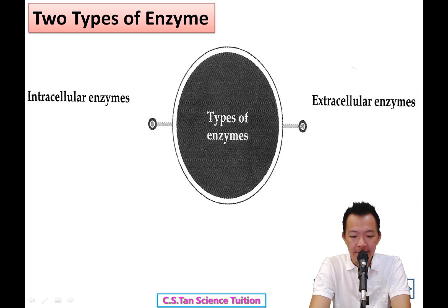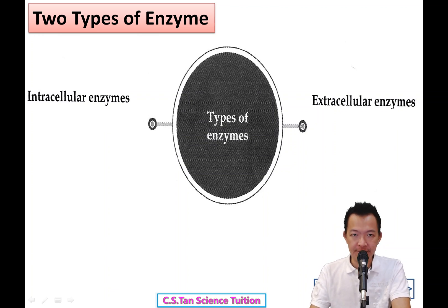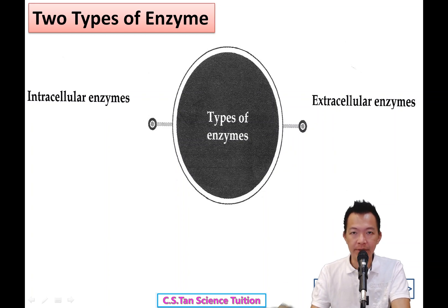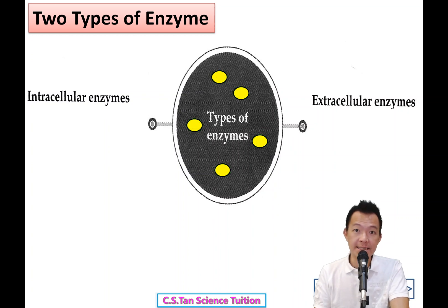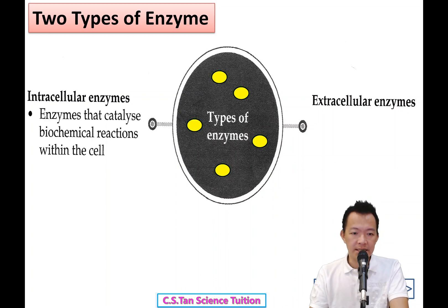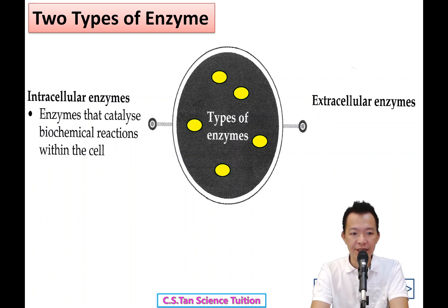2 types of enzymes. So when we talk about enzymes, we're having 2 types of enzymes. Number 1: intracellular enzymes — 细胞里面的 enzyme. So what's meant by intracellular enzyme? Intracellular enzymes are enzymes that catalyze the biochemical reactions within the cells — 就是在细胞里面进行化学反应的 enzyme. We call these intracellular enzymes.